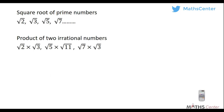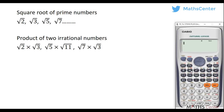Another example of irrational numbers is the product of two irrational numbers — that is, multiplying two irrational numbers together. For instance, square root of 2 multiplied by square root of 3 gives 2.449489743..., with decimals continuing to infinity and no clear order.